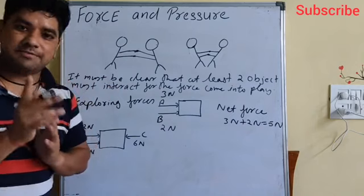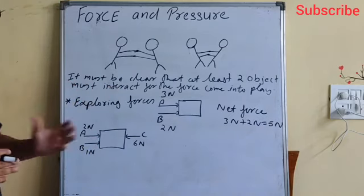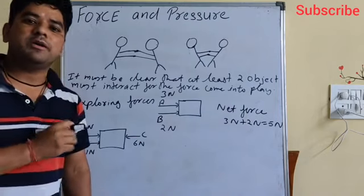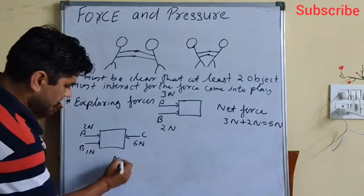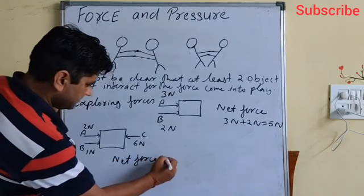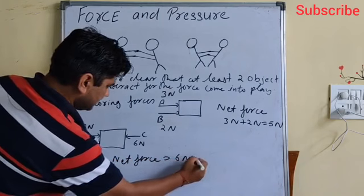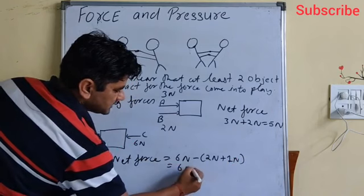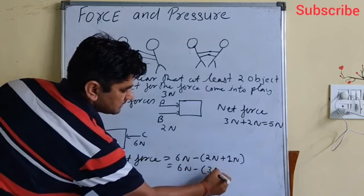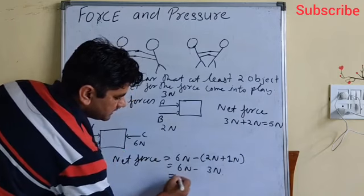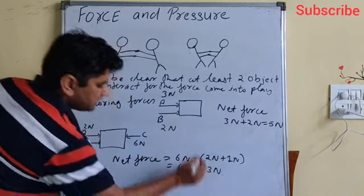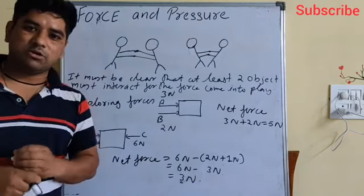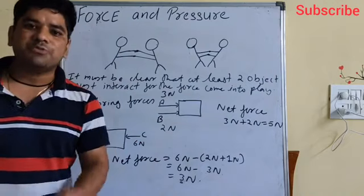When forces are applied from opposite ends, the net force acting on the body will be the difference of the forces. So the net force is six Newton minus three Newton, which equals three Newton. When forces act in opposite directions, the net force is the difference of the forces.